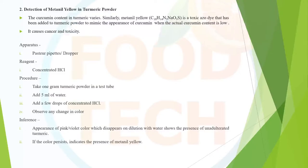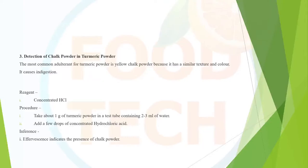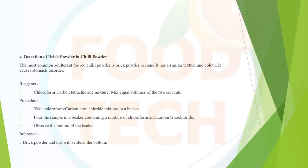Chalk powder is the most common adulterant in turmeric powder and is detected using HCl — effervescence formation indicates its presence. For detection of brick powder in chili: brick powder has a similar texture and color to chili powder when finely ground. Reagent used is a chloroform and carbon tetrachloride mixture. If the sample is added to this mixture and allowed to stand, sedimentation of particles at the bottom indicates the presence of brick powder or other dirt.